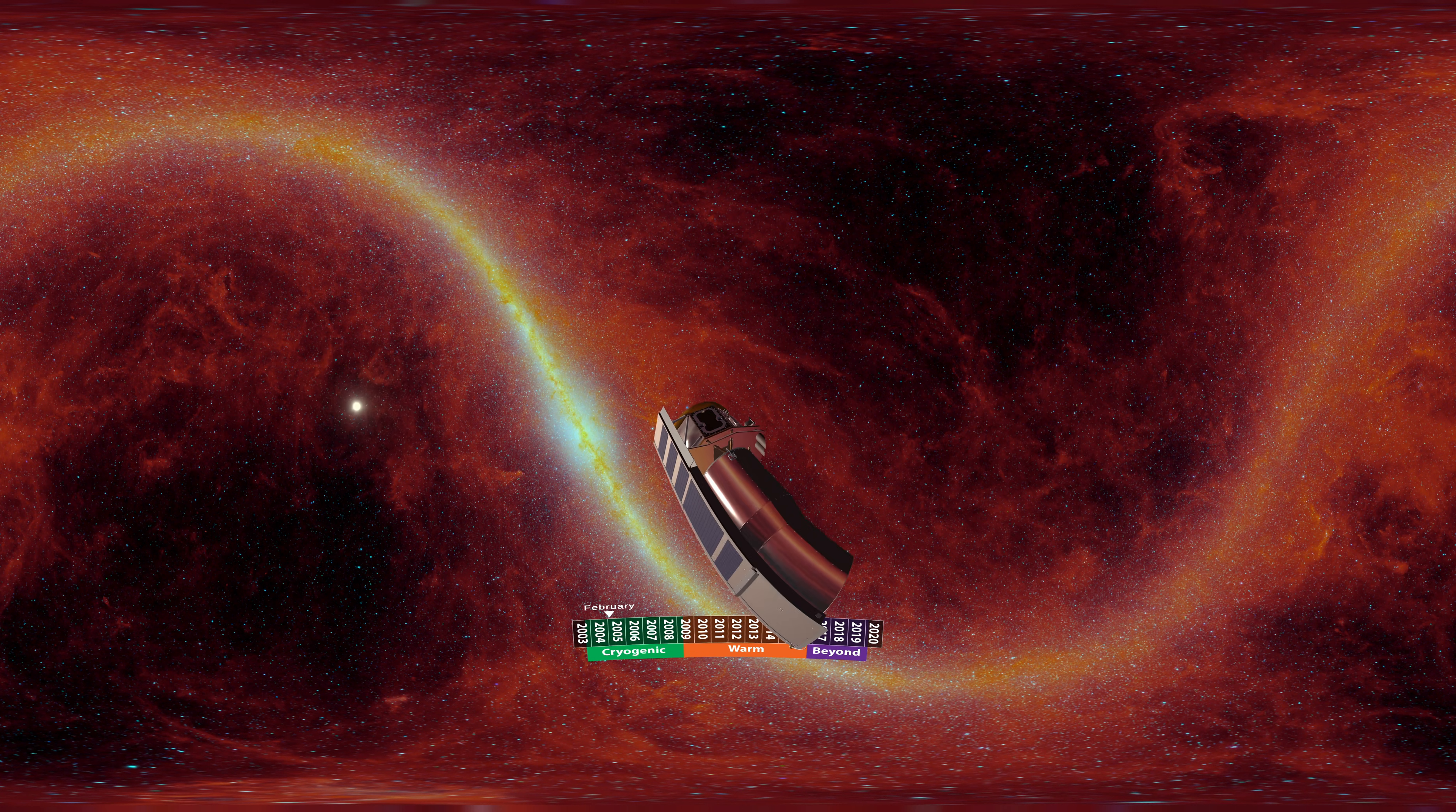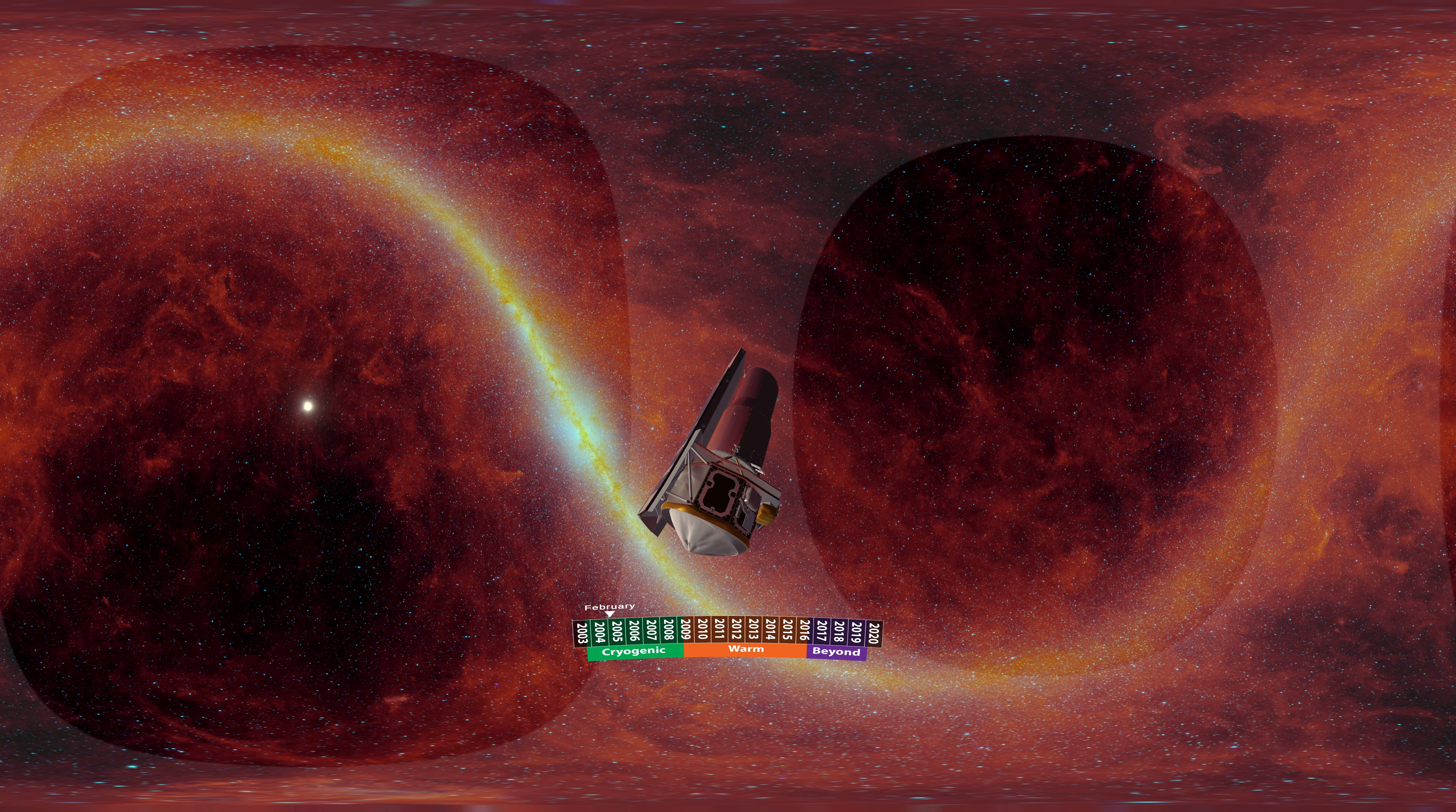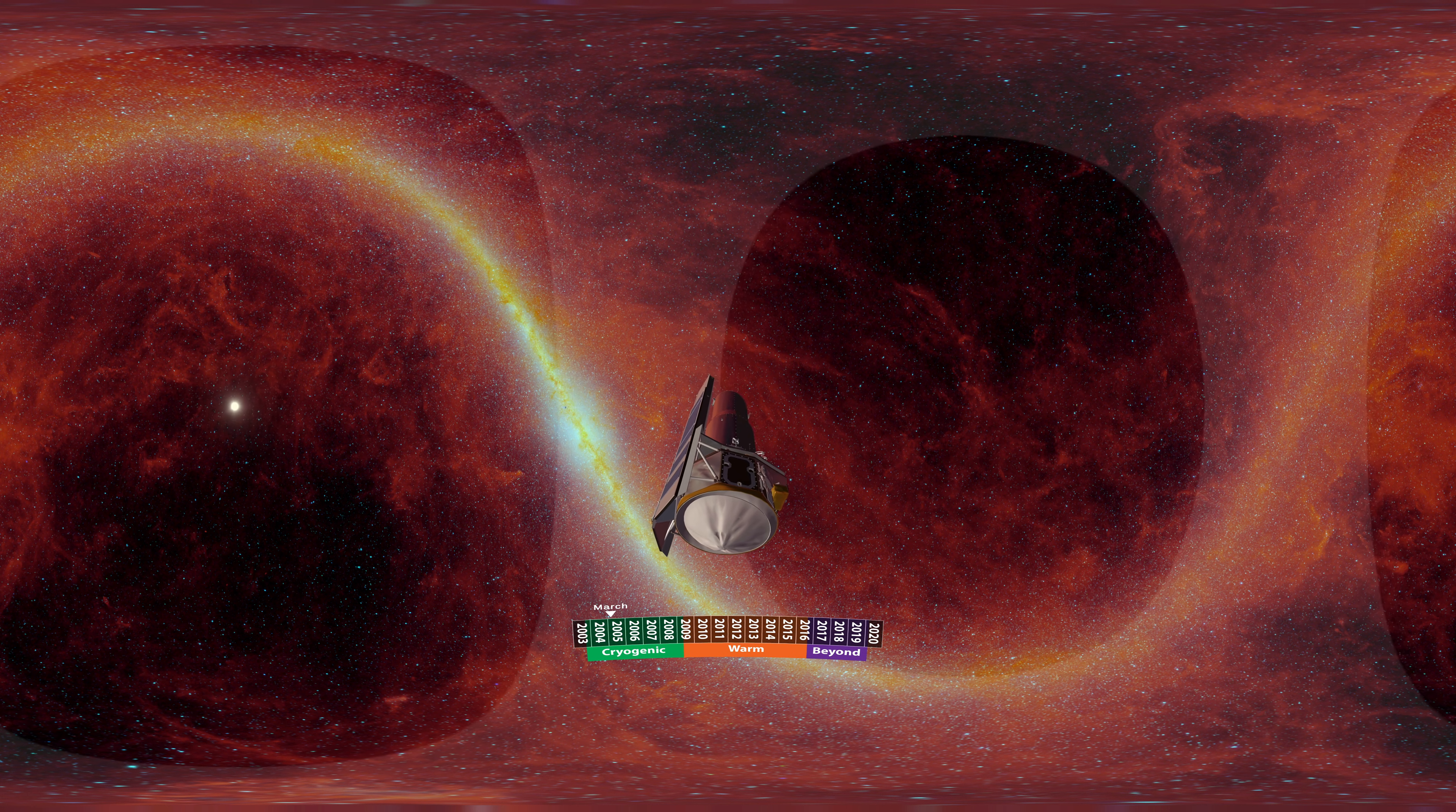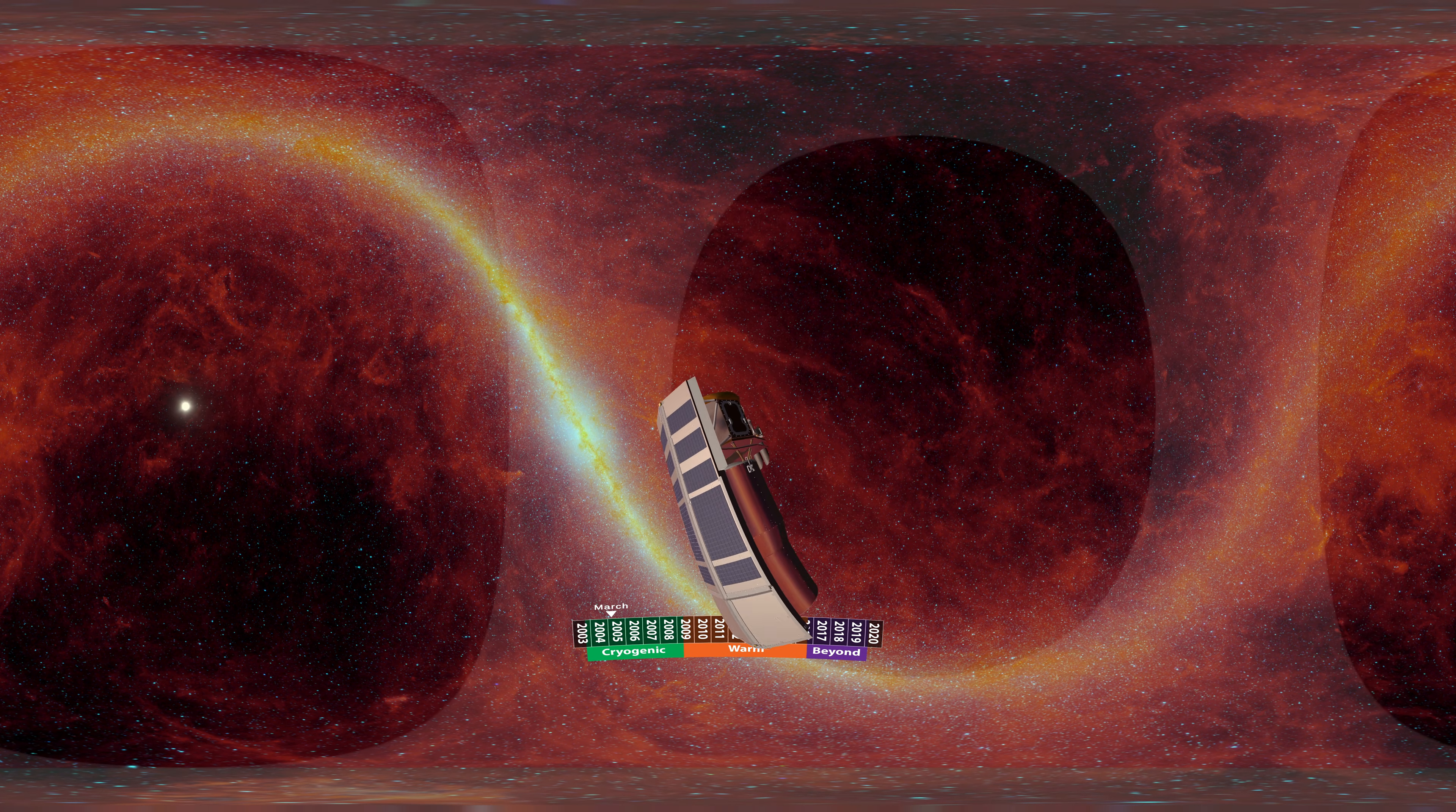This allowed observations anywhere in this 40-degree-wide swath of sky. As Spitzer orbited the sun, this band swept around the sky, giving access to most locations twice a year. Two regions, directly above and below us, were visible all year long.